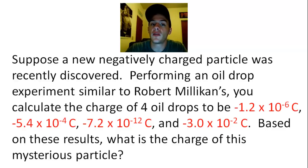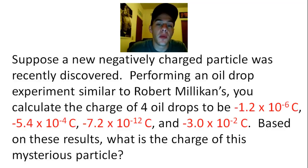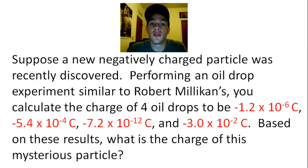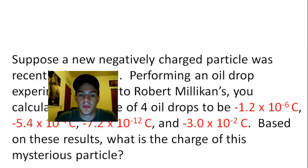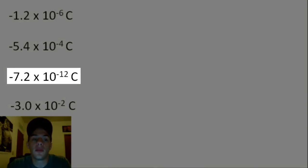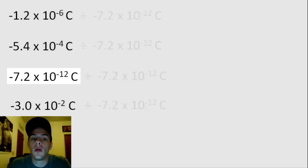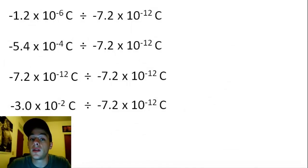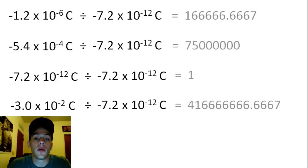You can start by dividing all four numbers by the smallest value, and if that doesn't cleanly divide into all four of your numbers, then you can try half of the smallest value, and then if that doesn't work, you can try a third of the smallest value, and so on and so forth until you get a number that all of your numbers are divisible by. So we start out with all four of the numbers, and we're going to divide all of them by the smallest value, which is negative 7.2 times 10 to the negative 12 Coulombs.